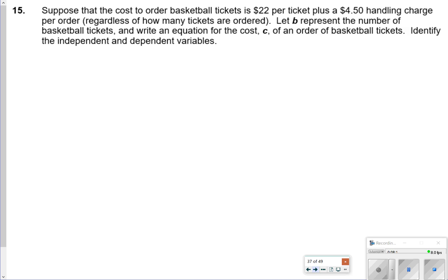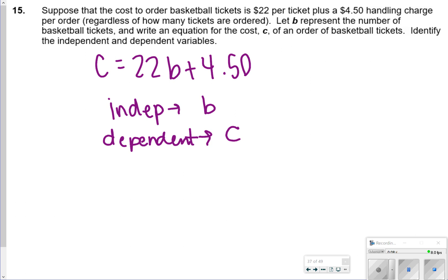For number 15, you are just basically trying to write an equation here to represent the situation, and then also try to find the independent and the dependent variables. So your cost would be equals 22 tickets. And B represents the number of basketball tickets. So 22B would have to be going together. And then plus the $4.50 handling fee. Because that is going to be given to you no matter what, or no matter how many tickets that you buy. Your independent variable would need to be B, the number of tickets. But your dependent variable would be the C. So just remember your independent is always your input. That's an easy way to remember because they both start with I's. And your dependent variable is always the output.